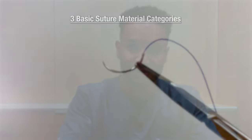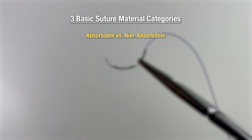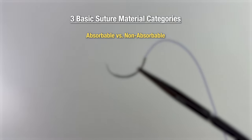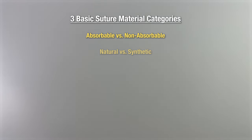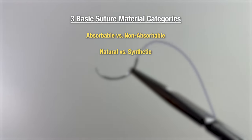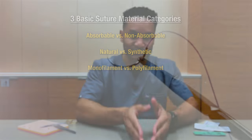When categorizing suture material, we break them down into three general categories: the absorption profile, the fiber source — whether it's natural or synthetic — and the filament type. So we'll go into absorption profile first.